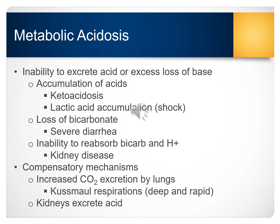Metabolic acidosis can occur when there is an inability to excrete acid or an excess loss of base. Conditions causing accumulation of acids include ketoacidosis or lactic acid accumulation, which typically results in shock. Loss of bicarbonate can occur with severe diarrhea. In kidney disease, there can be an inability to reabsorb bicarbonate and hydrogen ions. The compensatory mechanism in response to metabolic acidosis is to increase CO2 excretion from the lungs — you may see the patient having Kussmaul respirations, which are deep, rapid breathing. The kidneys will also attempt to excrete additional acid.